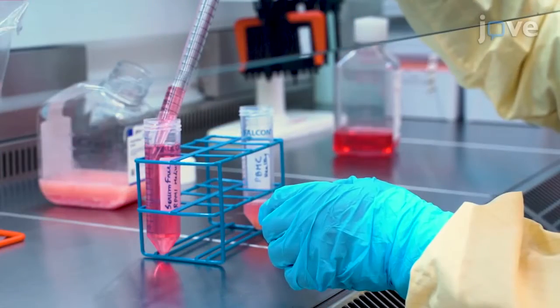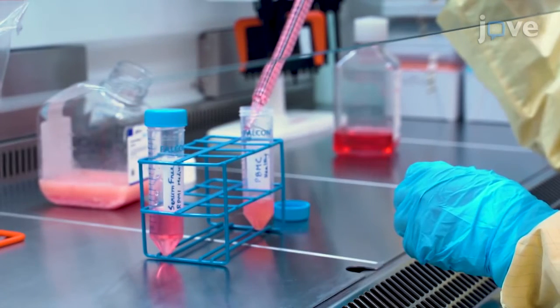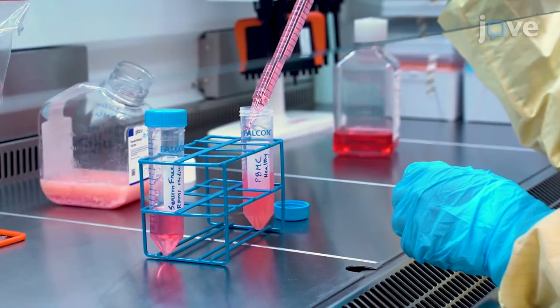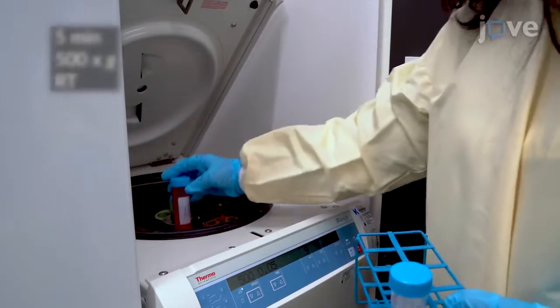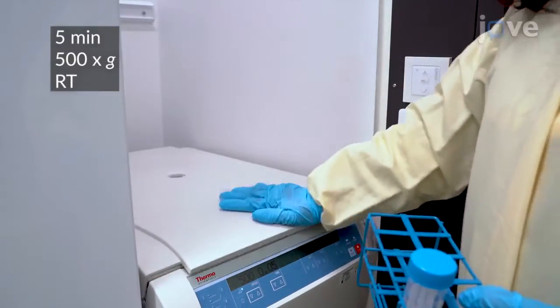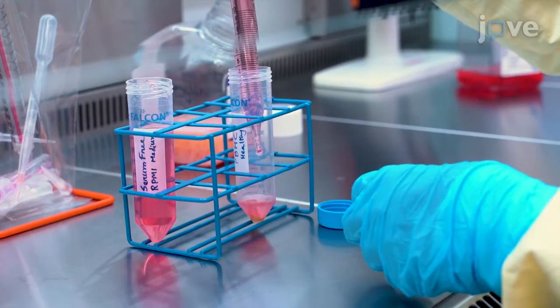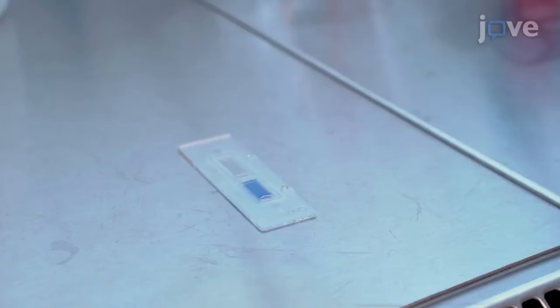Add serum-free RPMI medium to the cells to a final volume of 50 milliliters and gently invert the tube a few times before centrifuging. Then re-suspend the cells in 20 milliliters of serum-free medium for counting.